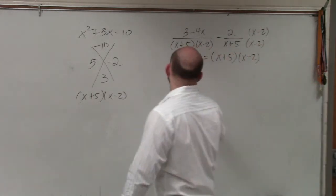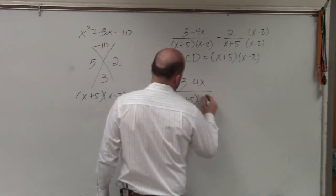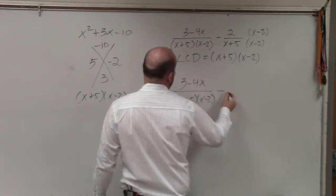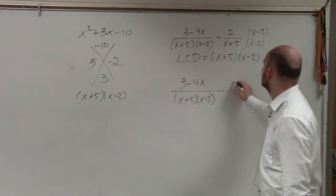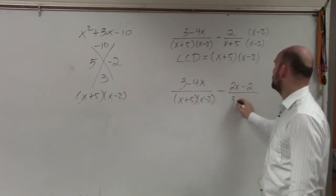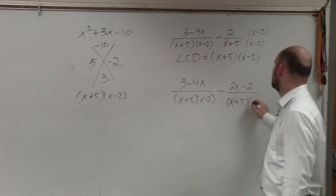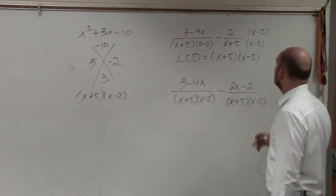Therefore, when I do that, I get (3 - 4x) over (x + 5)(x - 2), minus (2x + 4) over (x + 5)(x - 2).